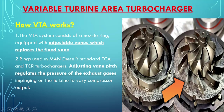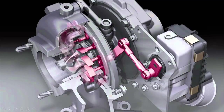If it impinges harder on the blade it tries to rotate the turbine at a very high RPM. If you open the vane further, the pressure at which it was impinging will reduce and the turbocharger RPM will reduce. So in low load we are closing the vane to a much smaller constriction, so the RPM build-up will be fast. In low load we constrict the turbine area so the turbine picks up RPM very fast, and then we open the turbine area a little more so it remains at that RPM and the flow of exhaust gas also increases.